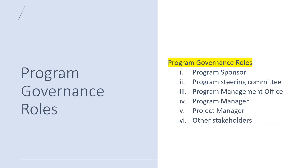The PMI standard identifies six common roles in program governance: program sponsor, program steering committee, program management office, program manager, project manager, and other stakeholders. Today we'll be focusing at a high level on what these six roles are and how they are utilized within the governance mechanism.